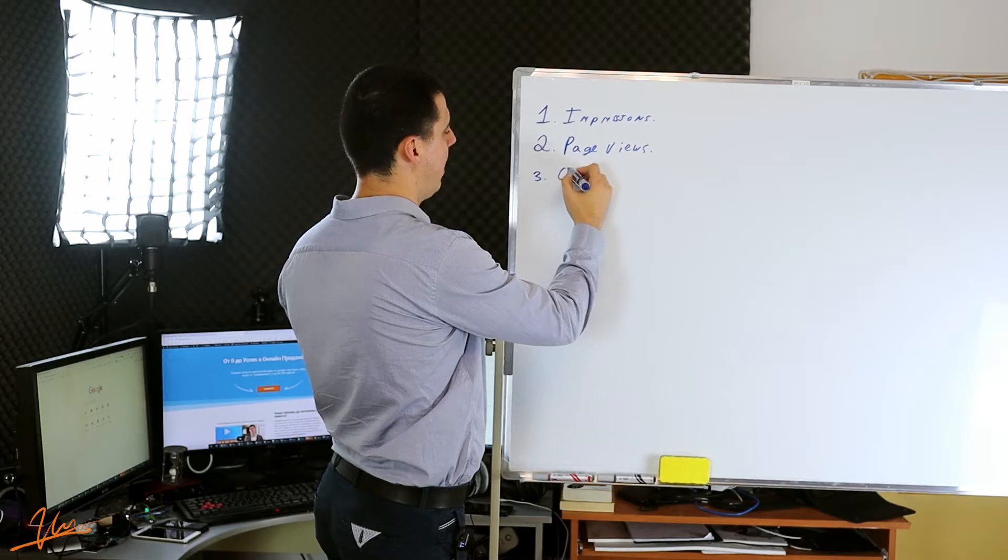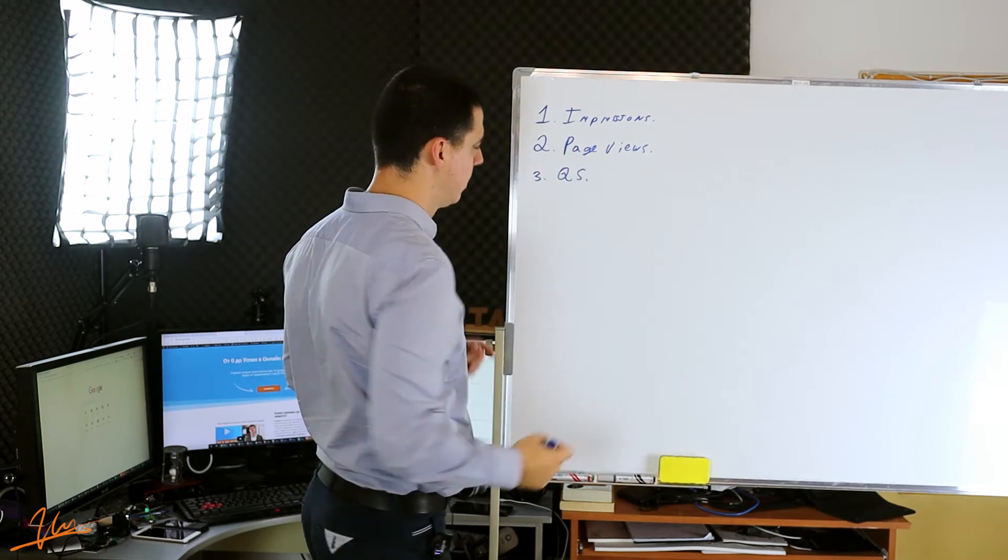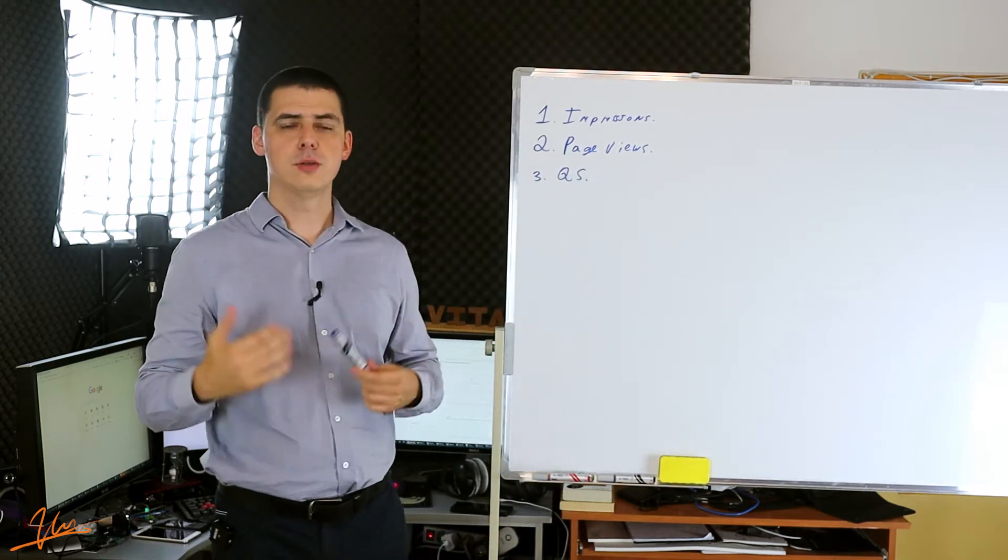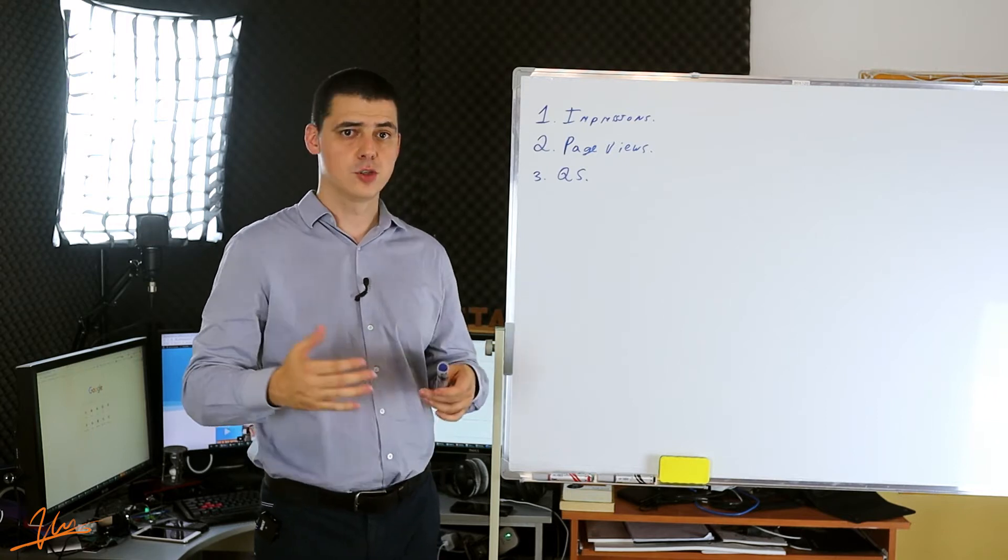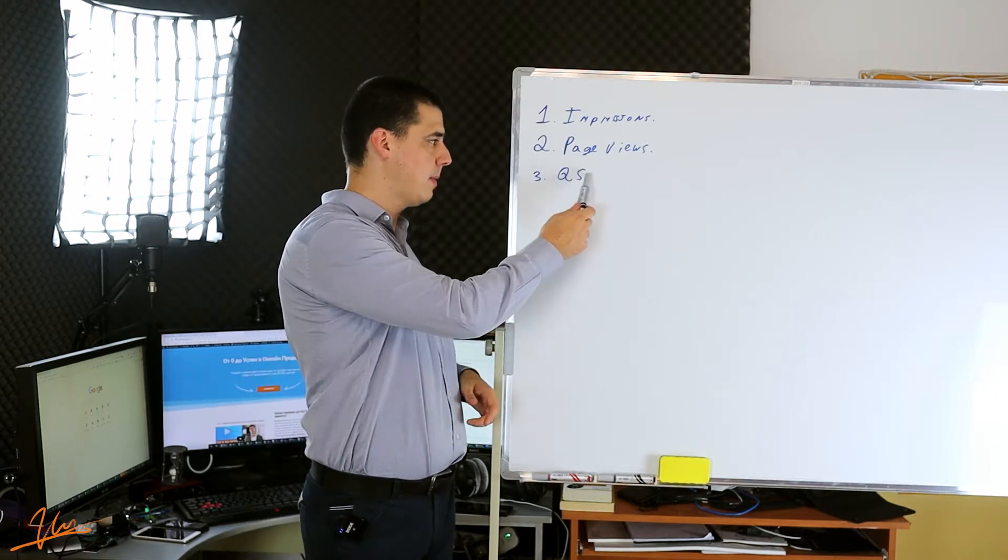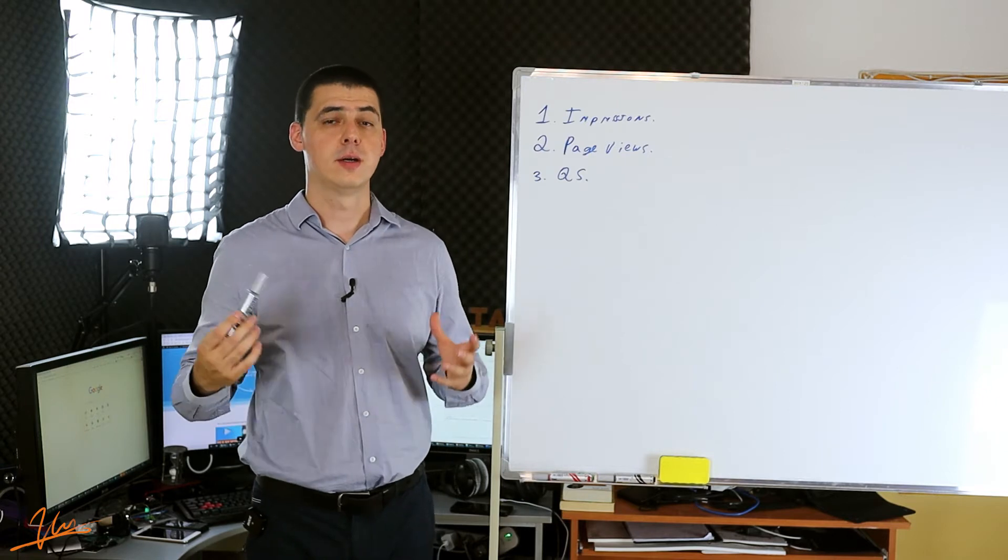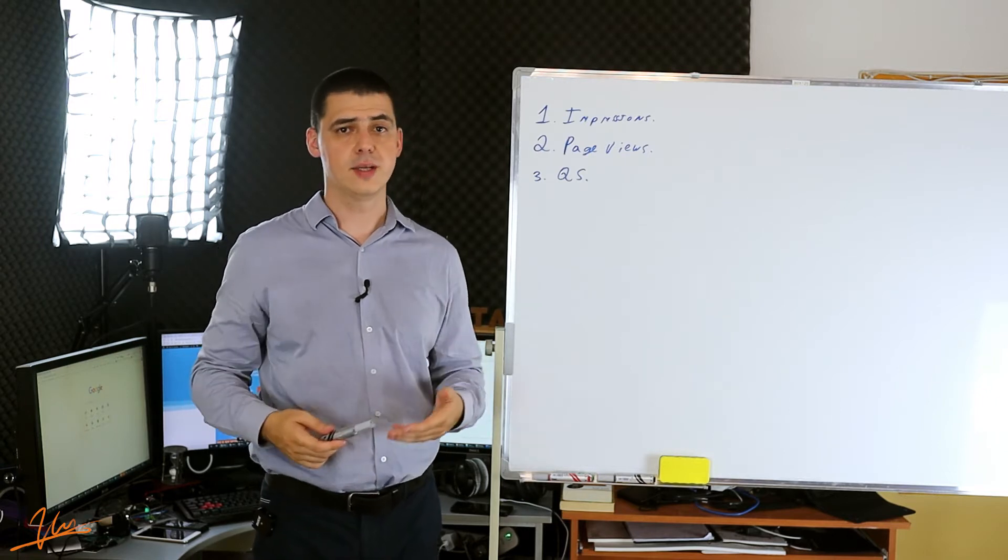Third metric is quantity sold. This is the amount of sales for every product that we have. The bigger this amount is, you have bigger sales and profit and everything else.